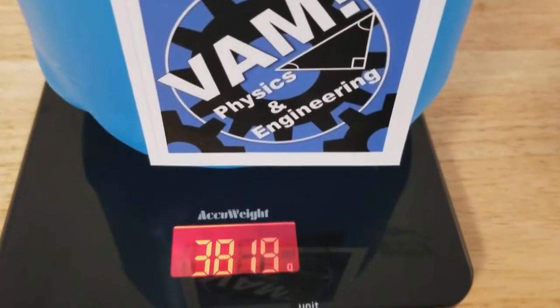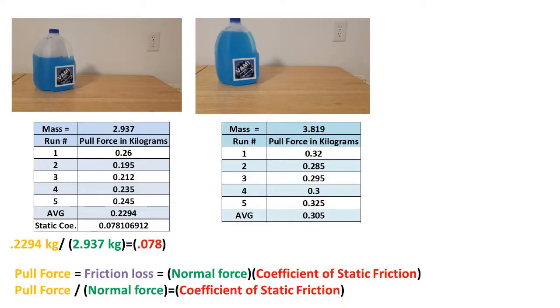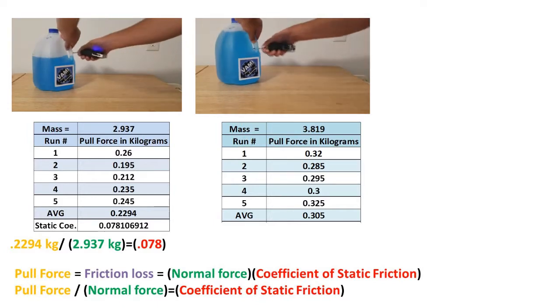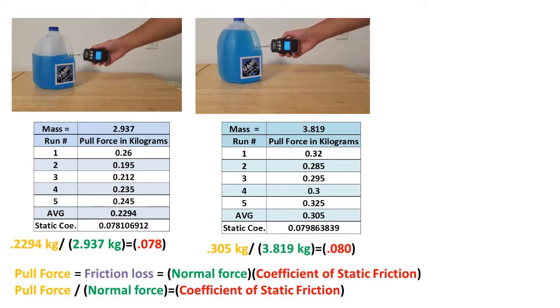I filled the jug till it had a total mass of 3.819 kilograms. I then pulled the jug five times and took the average force just before the jug started to move. I then plugged the average into the formula and got a coefficient of static friction of 0.08.